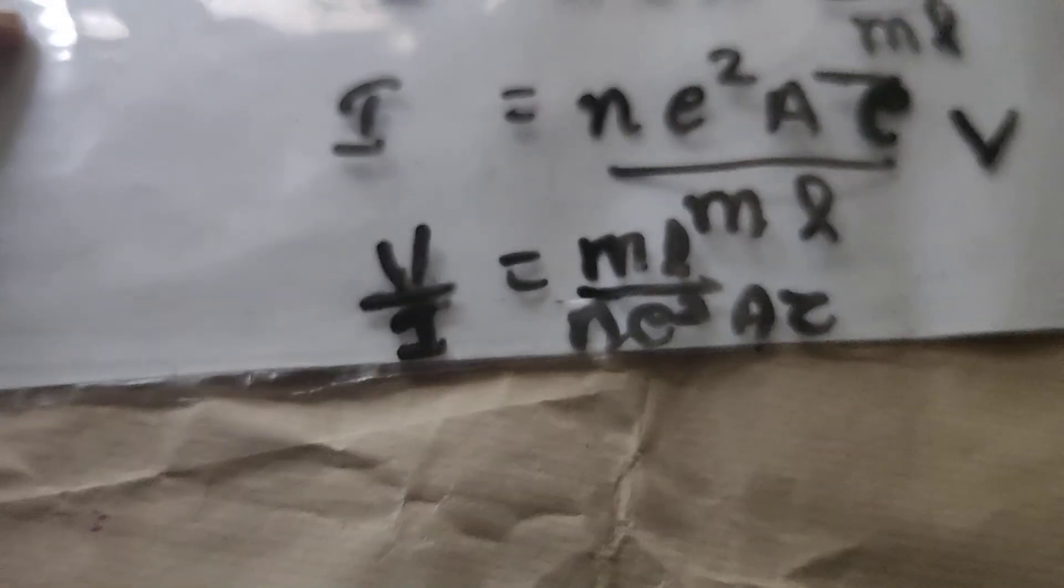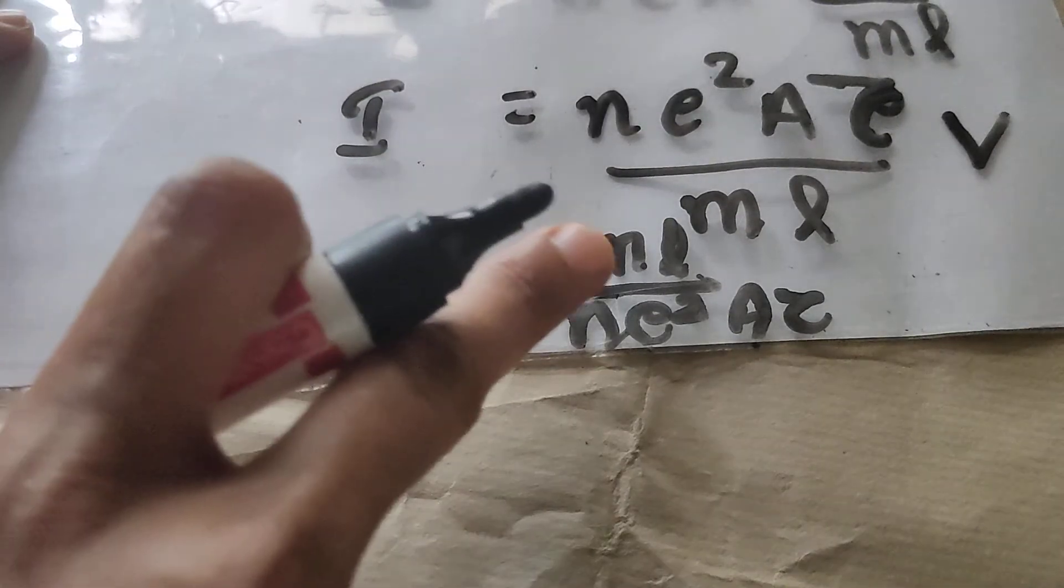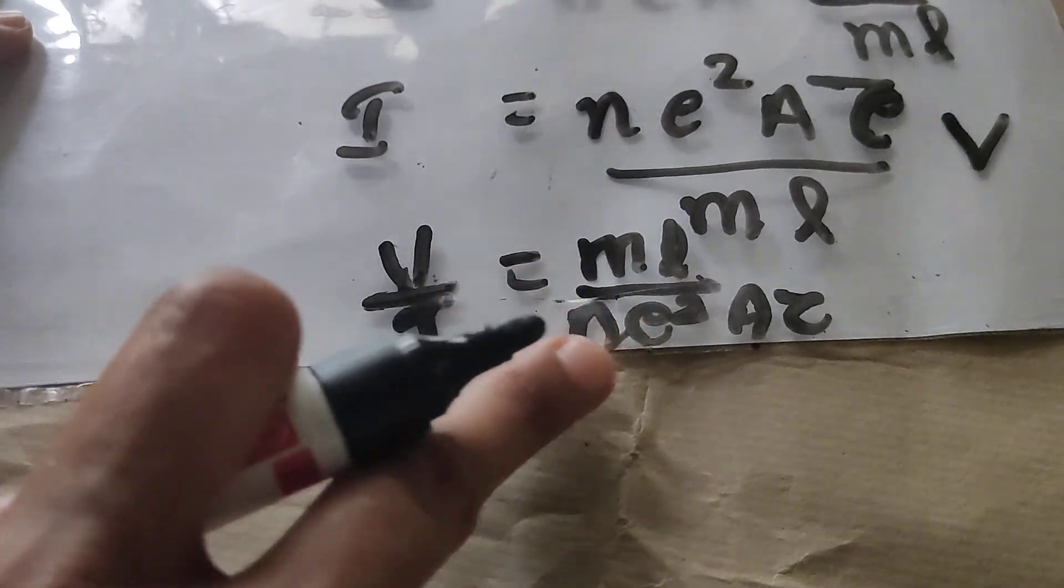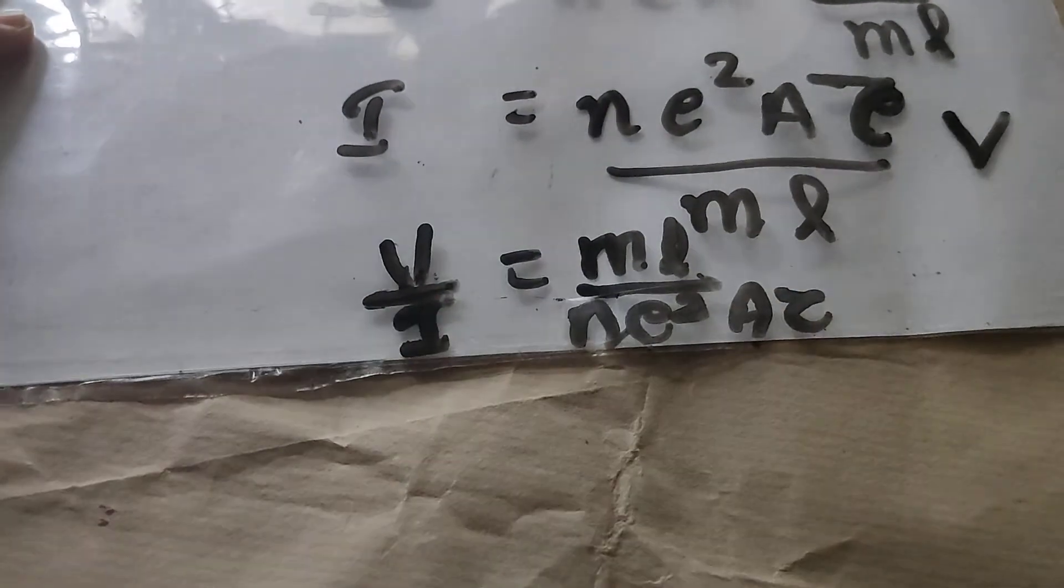That is V by I. And we have studied V by I is equal to resistance. So, resistance R is equal to mL by Ne square A into tau.